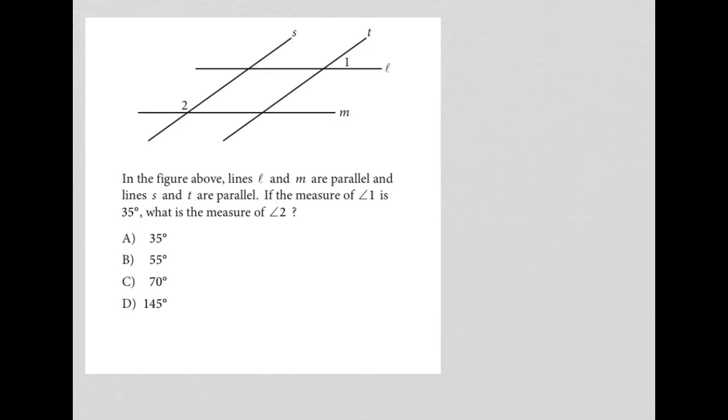So what I'm going to do before I continue reading is just make little indicators on my lines that they are parallel, because that's what the question told me. Next, it says, if the measure of angle 1 is 35 degrees, so again, I'm going to put a little angle symbol here and put 35 degrees. What is the measure of angle 2? So then I'm going to put a question mark here.